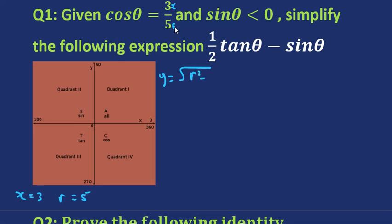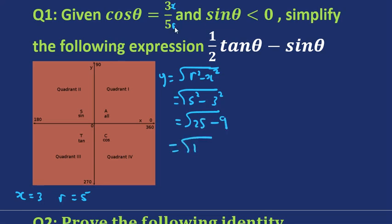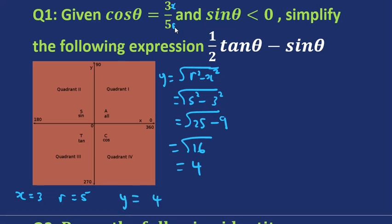Pythagoras gives us y equals the square root of r squared minus x squared. This is the square root of 5 squared minus 3 squared, because r is 5 and x is 3. That's 25 minus 9, so the y side is equal to 4.